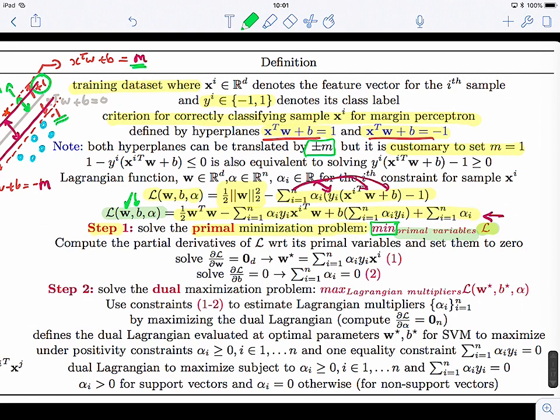And to do this, we need to compute the partial derivatives with respect to the primal variables and set them to zero. So when solving these two systems, because here we have two variables, W which is a vector and B which is a scalar, we solve this and we got, interestingly, an explicit form of W star, which is the optimal parameter we're looking for.